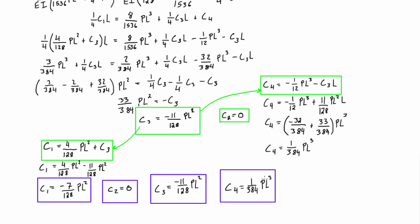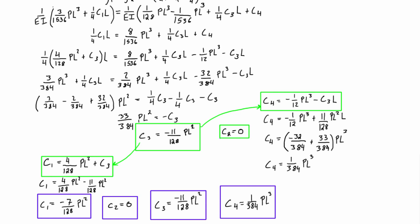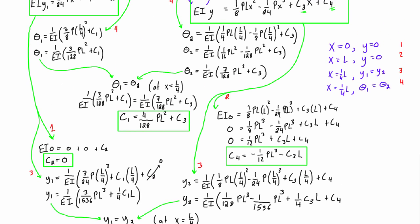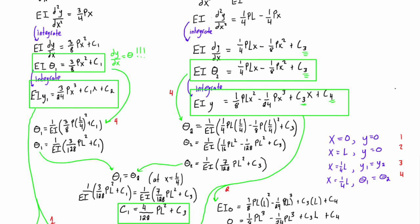So now we have each of our integration constants, C1, 2, 3, and 4. And now what we want to do is we want to grab our original expressions here for theta1, theta2, y1, and y2. And we want to plug in all of those unknowns for C1, C2, C3, and C4.